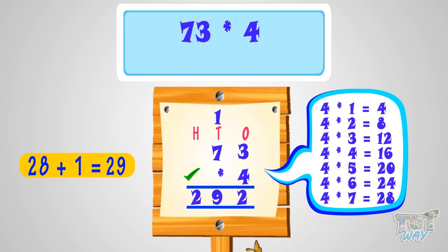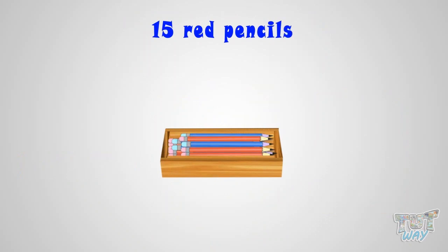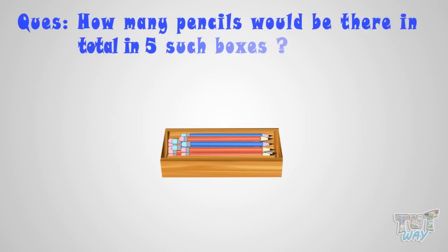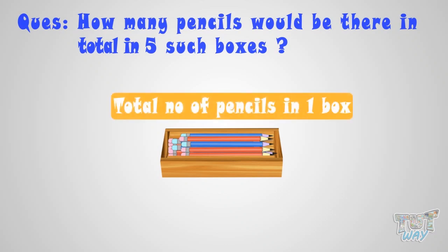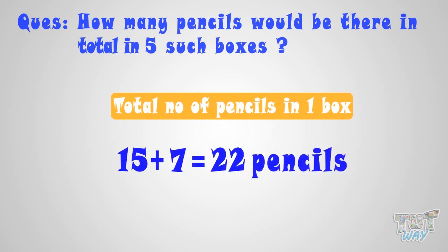Now, let's take another example. There are 15 red pencils and 7 blue pencils in one box. Then, how many pencils would be there in total in 5 such boxes? First, we need to find out total number of pencils in one box. In one box, we have 15 plus 7 equals 22 pencils.